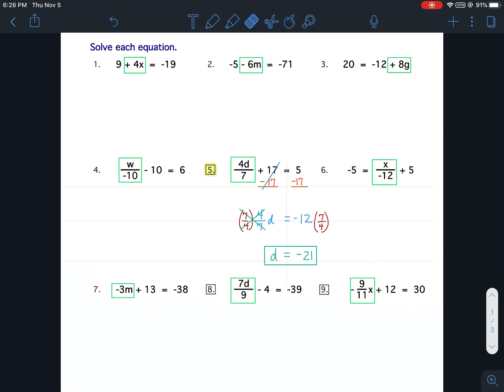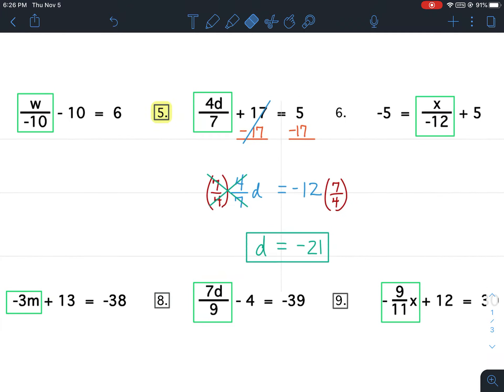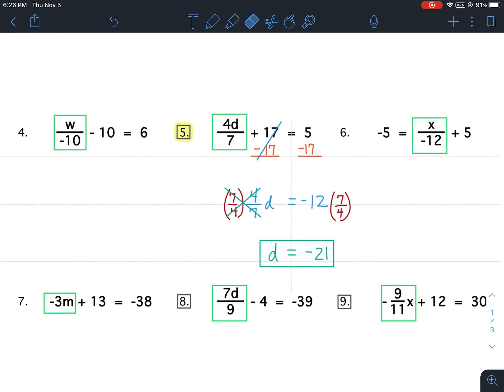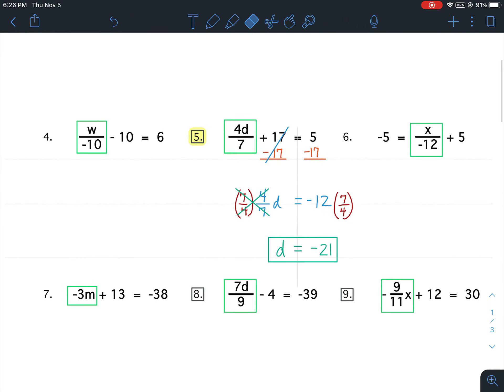Now, 5, 8, and 9. Notice how 5, 8, and 9 have boxes around them. 5, 8, and 9 are all problems that are going to require you to take the reciprocal.